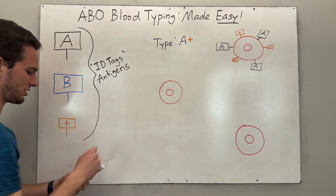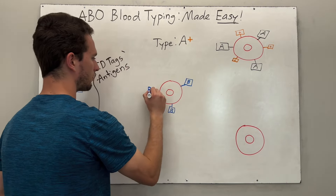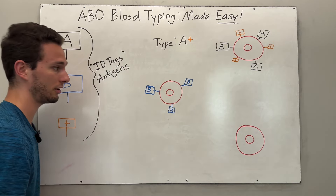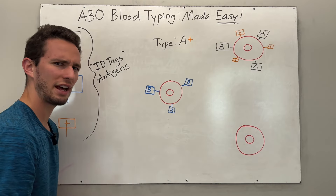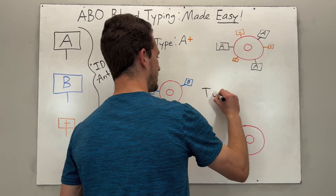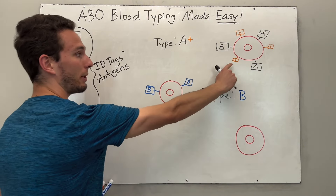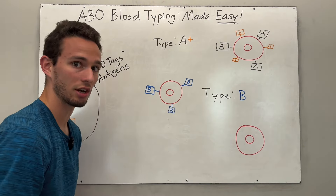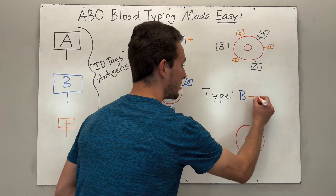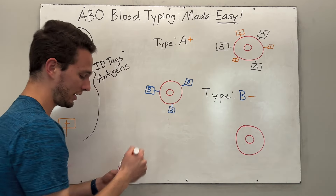Let's take another example. This cell has just the B antigen on it, so what type of blood would this person have? They would be type B. But here's the thing — this person is lacking that positive antigen. So therefore, we determine that this person is actually B negative, meaning they don't have that positive antigen on their blood cells.